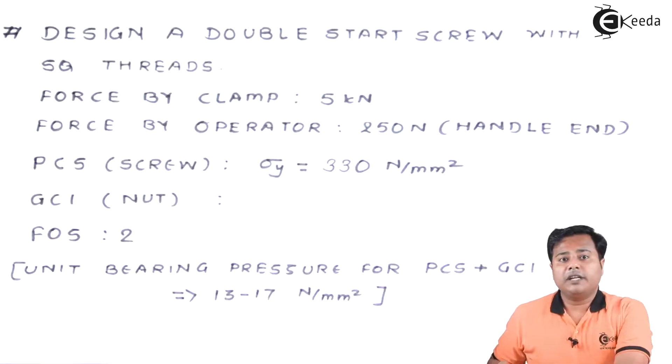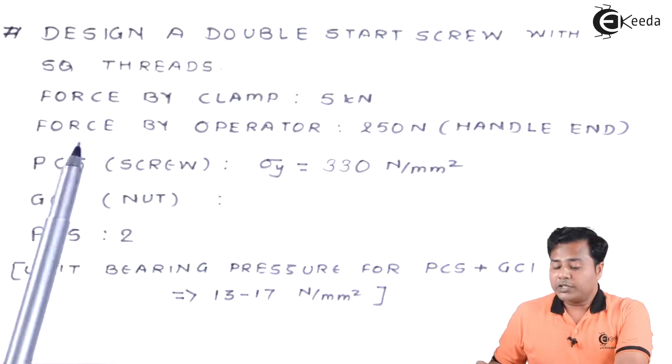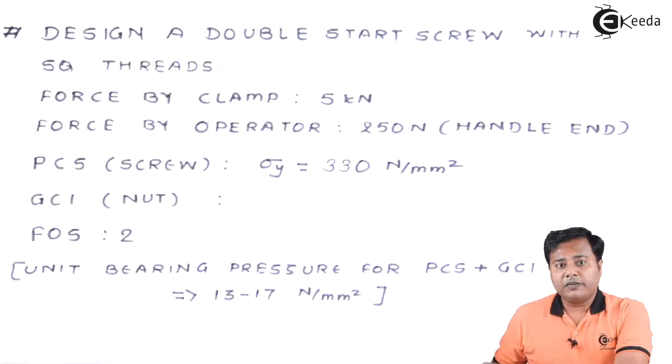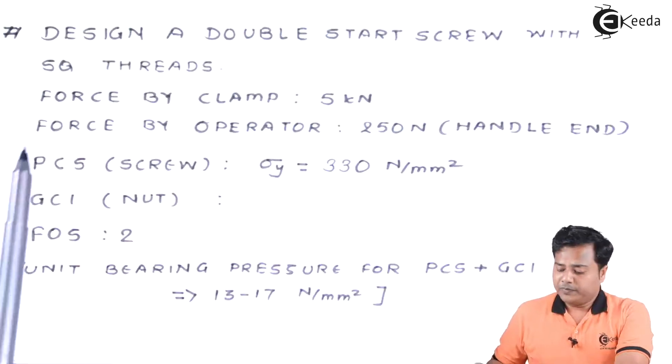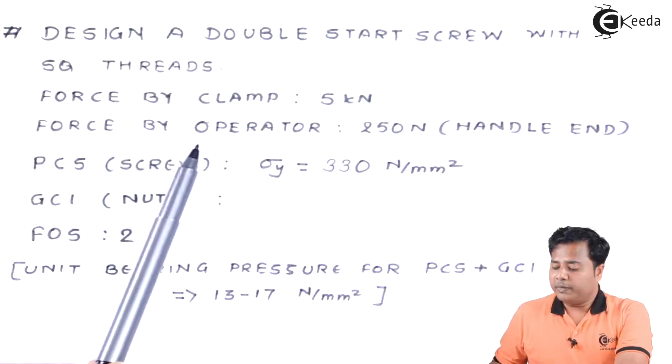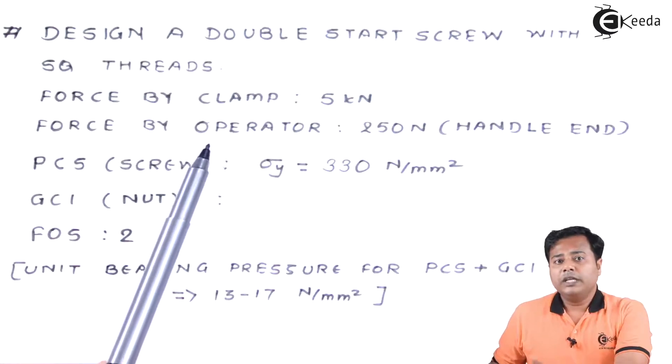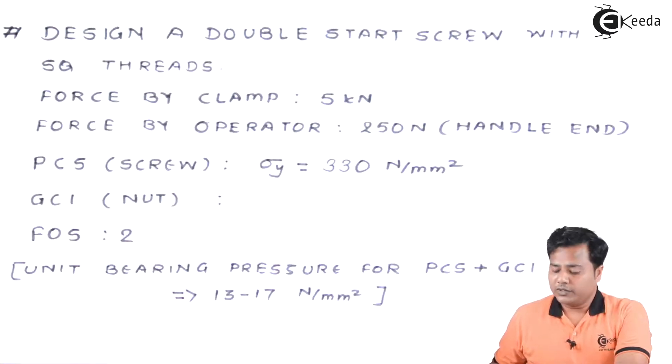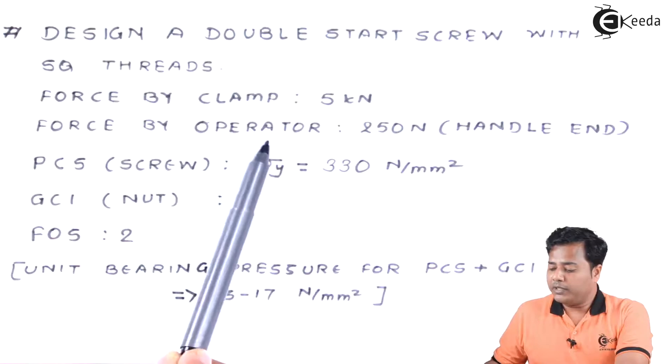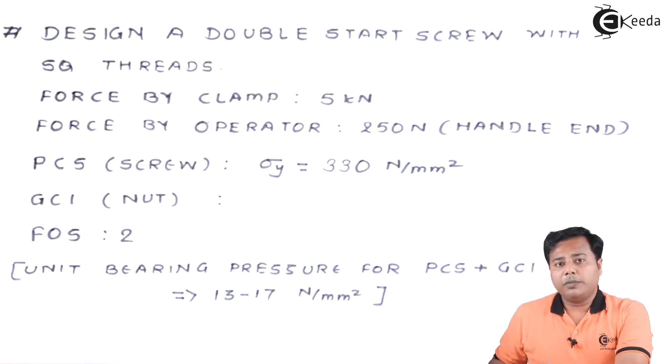The problem statement is there in front of you. Design a double start screw with square threads. These are the specified specifications, so we need not to choose them separately. Force applied by the clamp is 5 kN. The application force is 5 kN. Force by operator is 250 N. The operator who is going to work with this device is going to apply a maximum of 250 N.